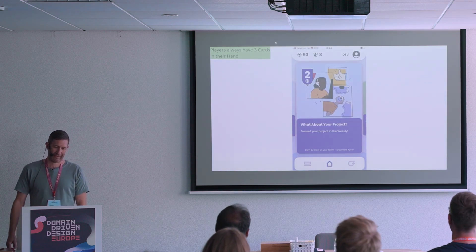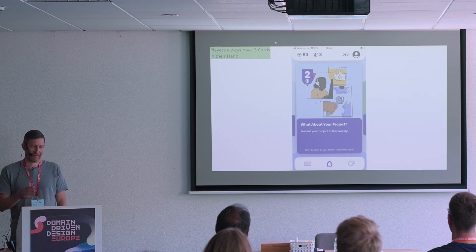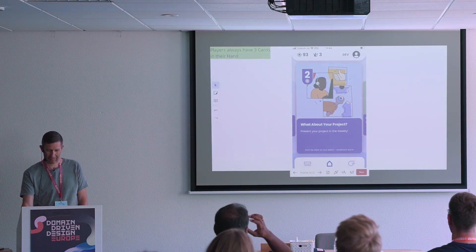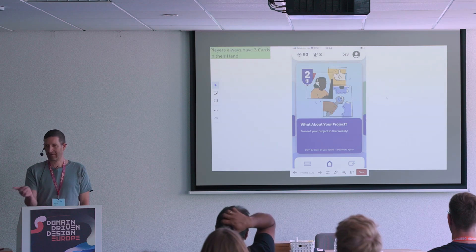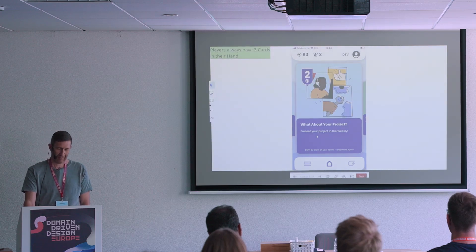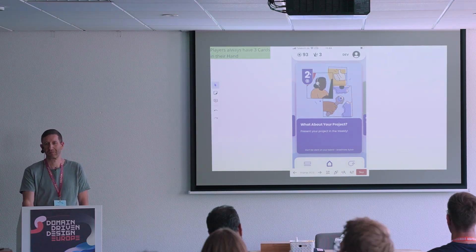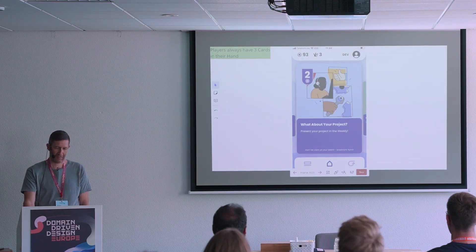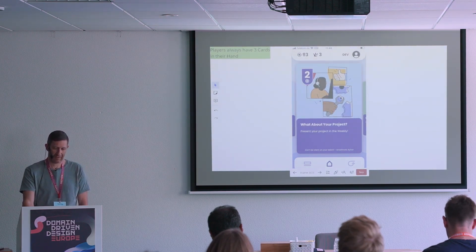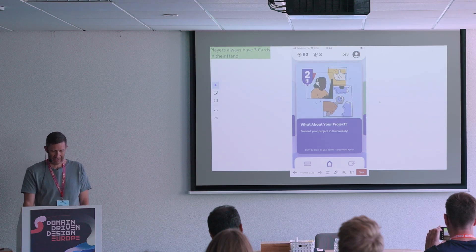And it looks like this. A player always has three cards in their hand — one on the left, one on the right, and a middle one — and you can swipe to read all the cards. Each card has a title and a description of what you should do. In this case: present your project in the weekly. It has points you get when you finish this card, and we also see a crown showing my rank — I was on rank three at that point. This is the total amount of points I have collected. This is from the dev environment.